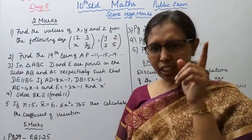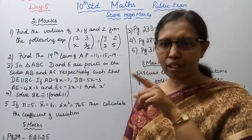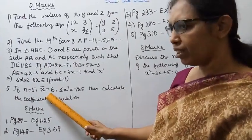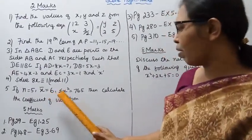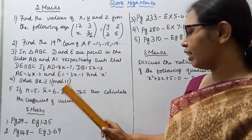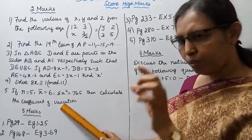x̄ is the mean. The formula is σ/x̄ × 100. Substitute the values to calculate.